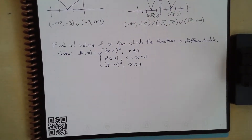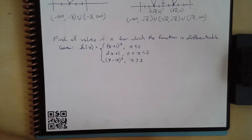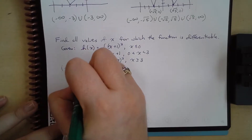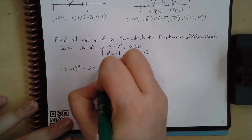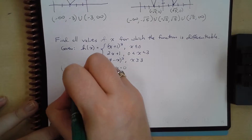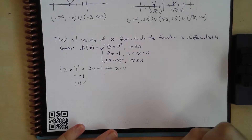So we want to find all the values of x for which the function is differentiable. We're given h of x equals x plus 1 squared when x is less than or equal to 0; 2x plus 1 when 0 is less than x is less than 3; and 4 minus x squared when x is greater than or equal to 3. We need to first investigate what is happening at these break points. Setting x plus 1 squared equal to 2x plus 1 at x equals 0, I get 1 squared equals 1, which is 1 equals 1. It's differentiable there.